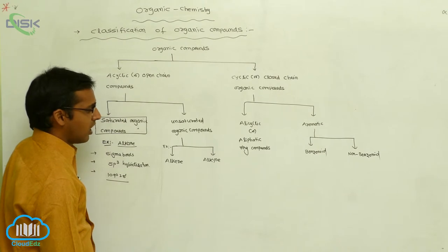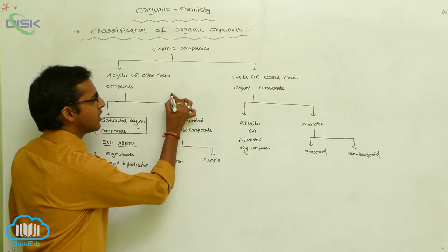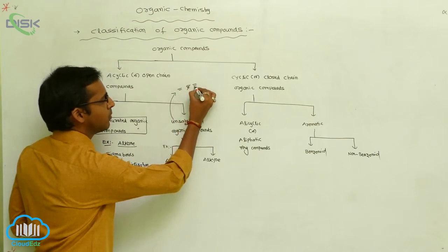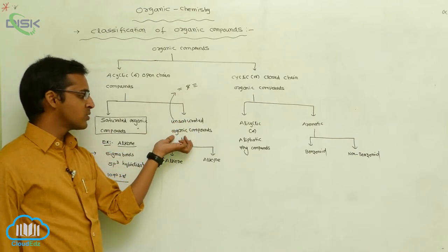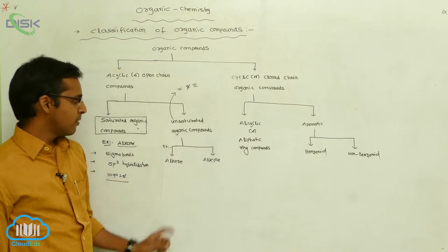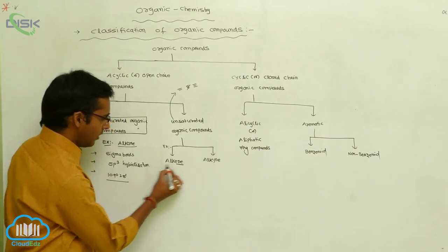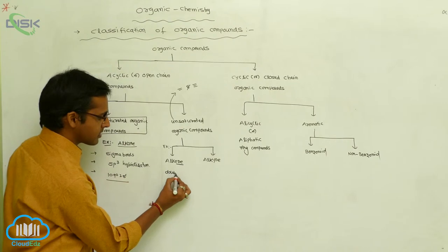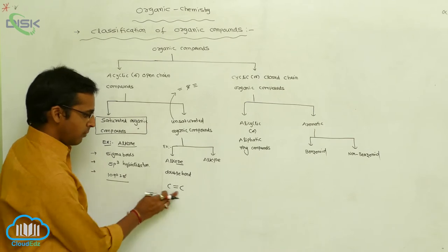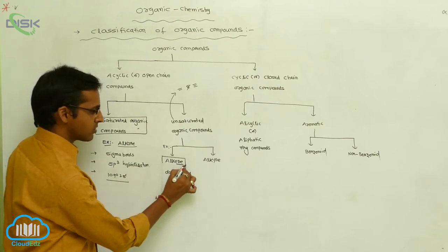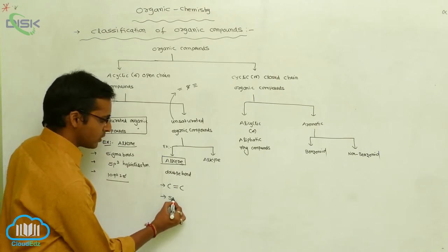Unsaturated organic compounds contain double bonds and triple bonds. Compounds with double or triple bonds are called unsaturated organic compounds, with examples alkene and alkyne. In alkenes, a double bond is present between carbons — written as C double bond C — and generally alkenes undergo sp2 hybridization.